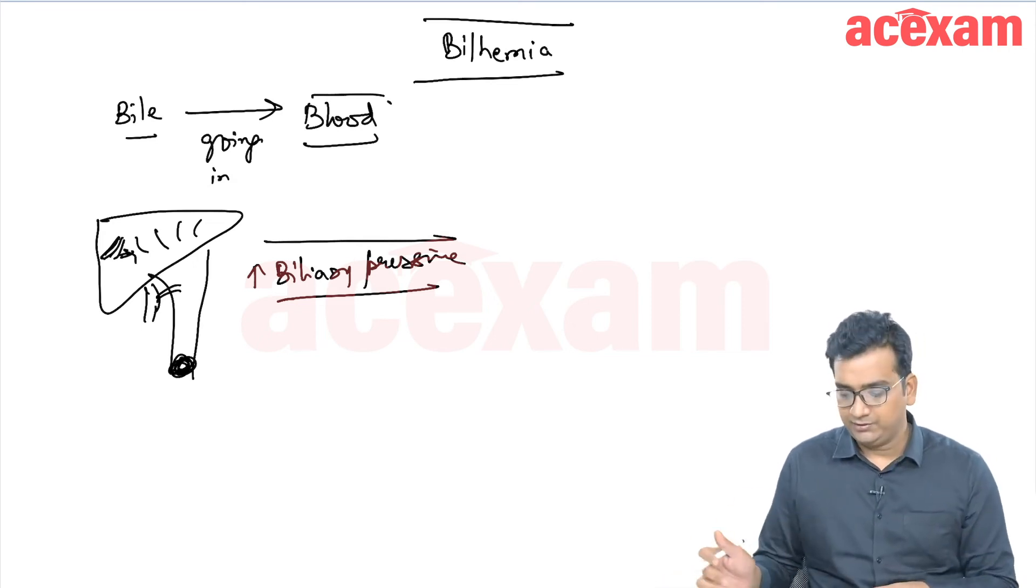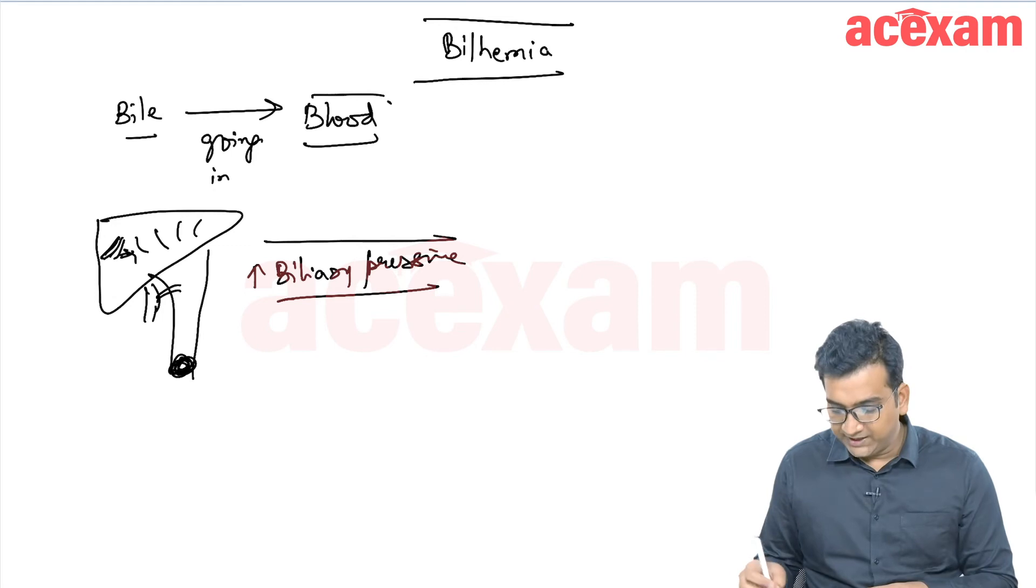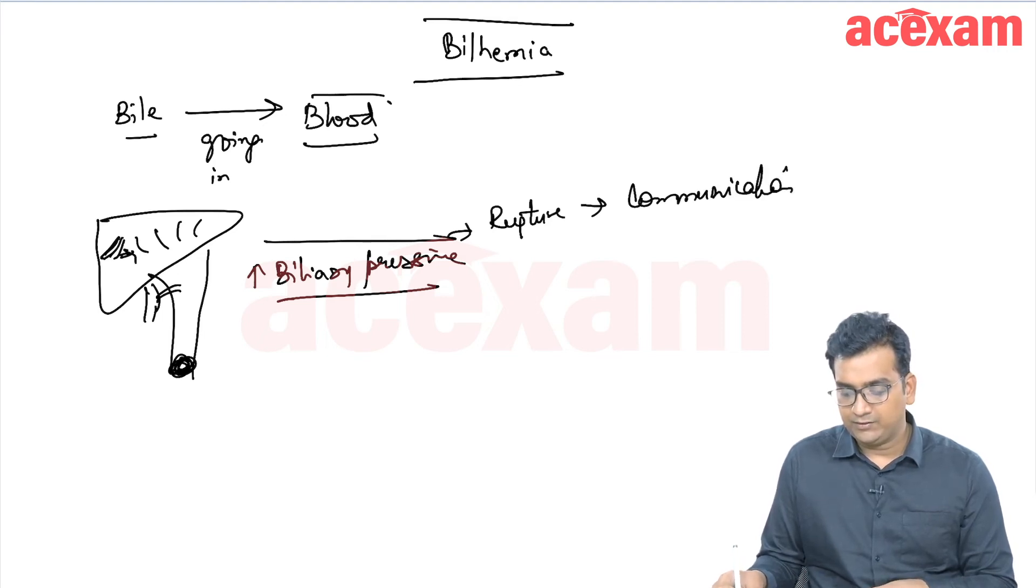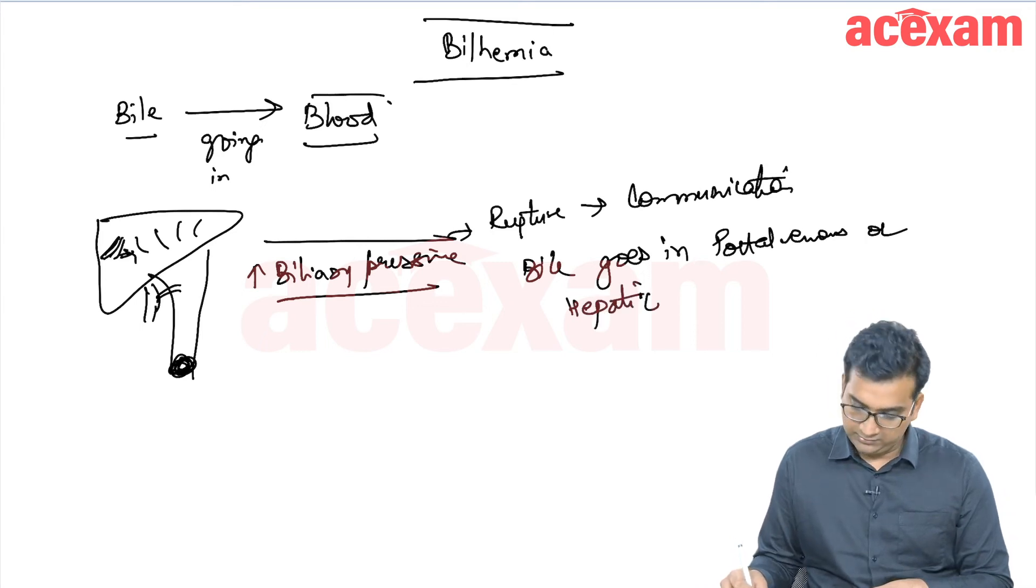there is a communication. So due to this increase in the biliary pressure, there is rupture leading to a communication connection and bile goes in portal venous or hepatic venous branches.